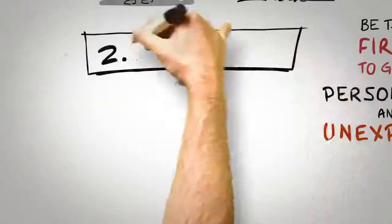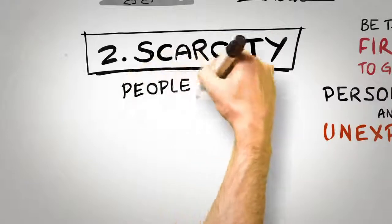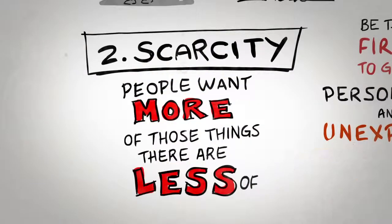The second universal principle of persuasion is scarcity. Simply put, people want more of those things they can have less of.